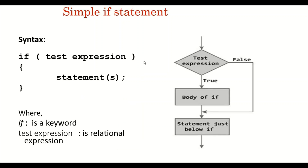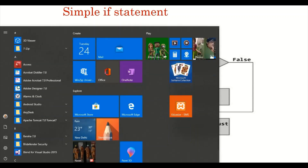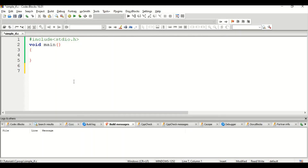The flowchart helps you understand it easily. The program executes from top to bottom. It will test the particular expression; if the expression is true it will enter into the body of the if statement, and then the remaining part of the program will be executed. If the condition is not satisfied, it directly comes out of the if statement and the remaining part of the program gets executed. Simple if statement should be used only when we have one solution for one particular problem.